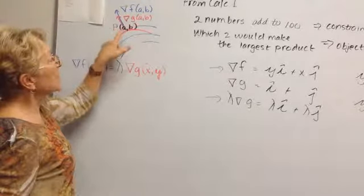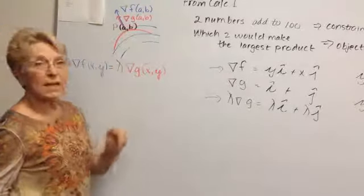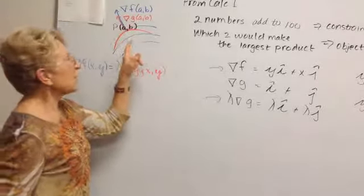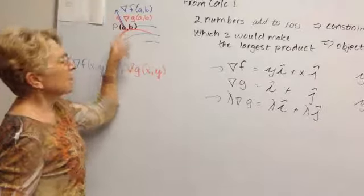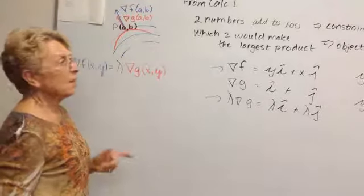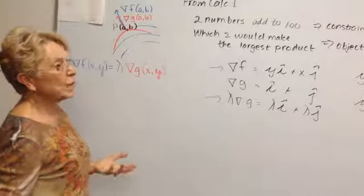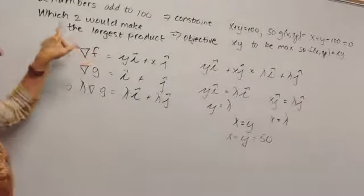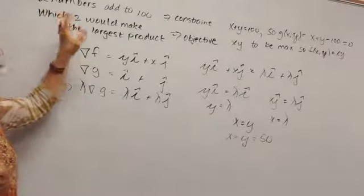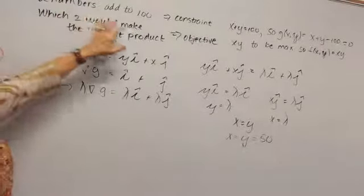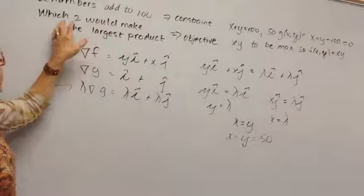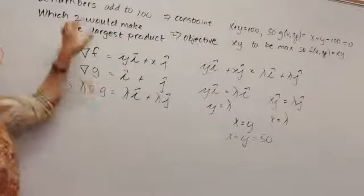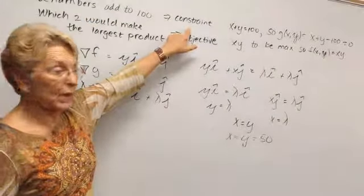So we're looking for the place that the constraints are parallel, thus ensuring that the constraint is met. We're going to remember a problem from Calc 1, a simple one we started with a couple semesters ago. Two numbers add to 100, and we're looking for the two to make the largest product.